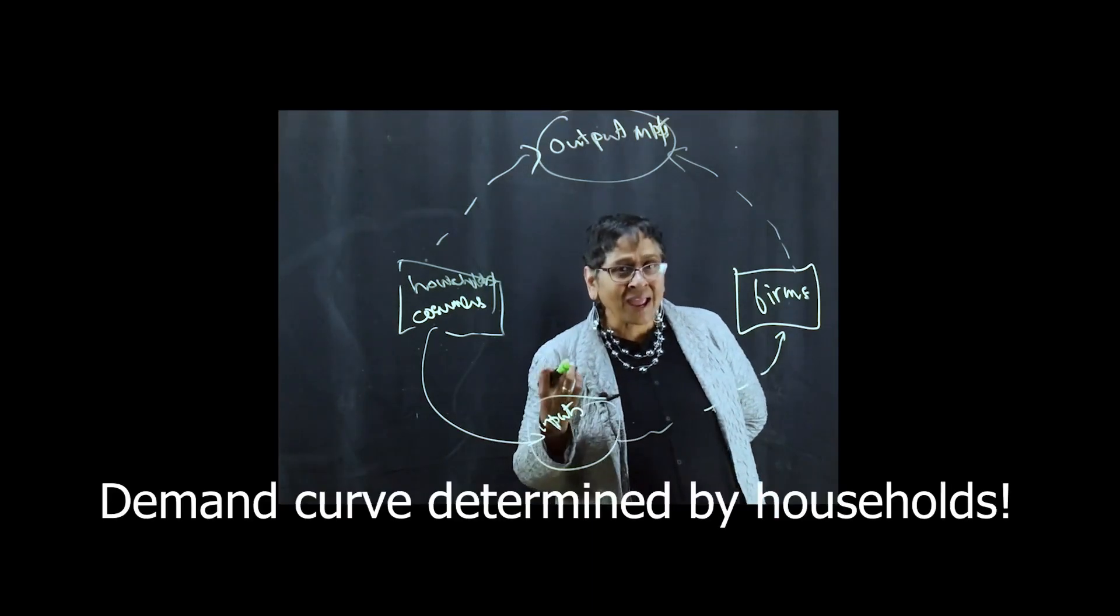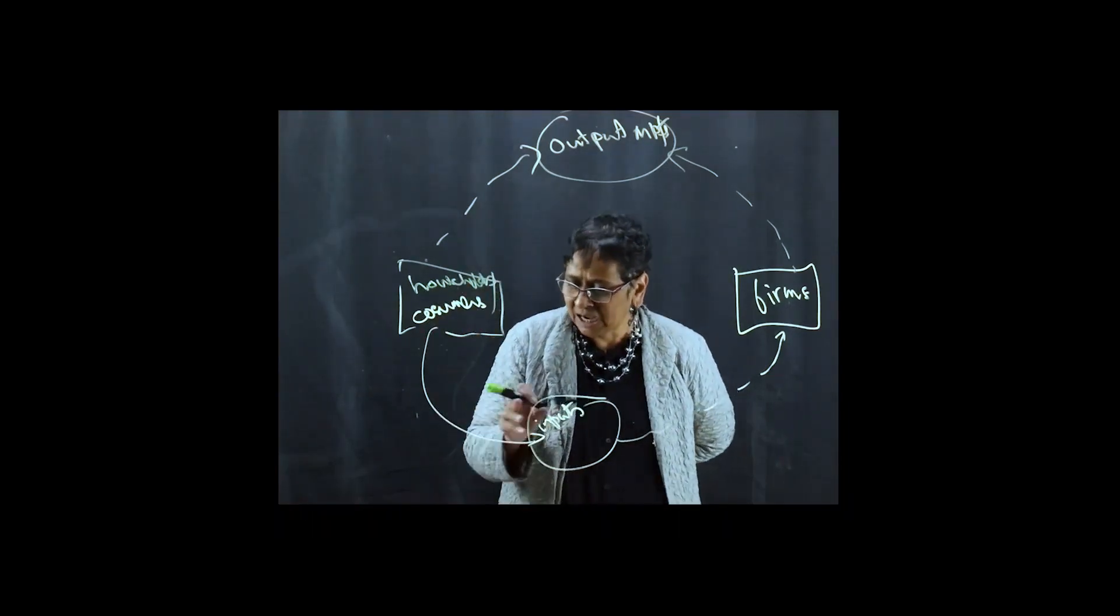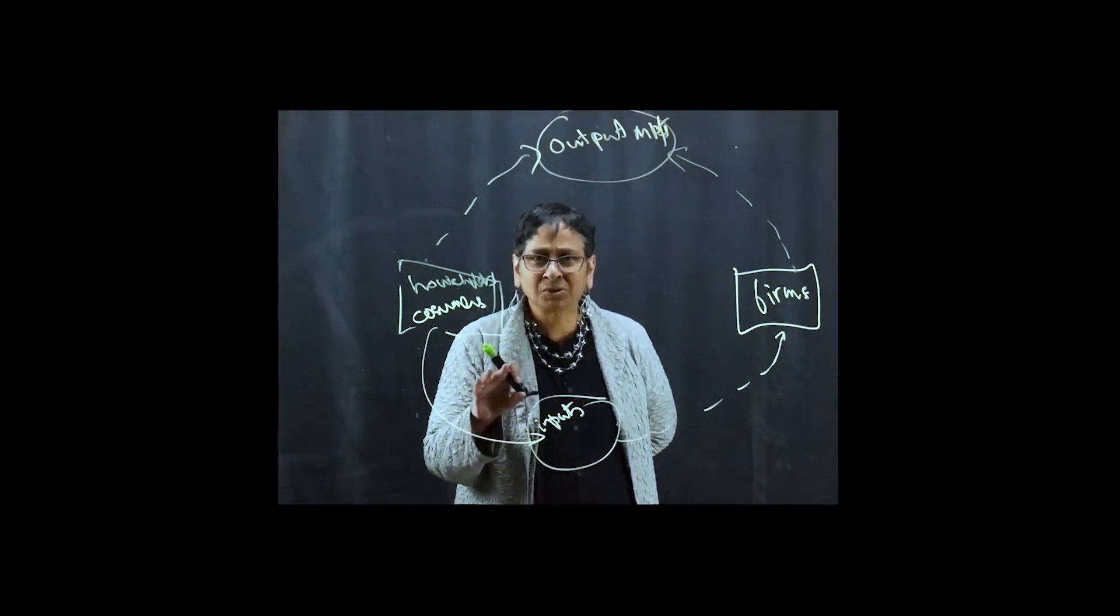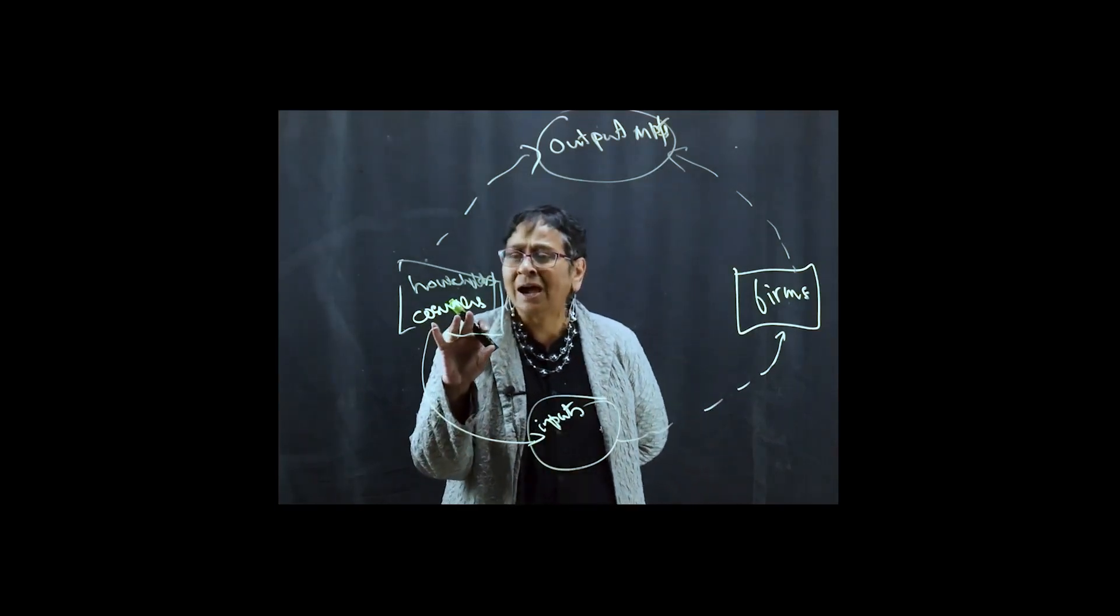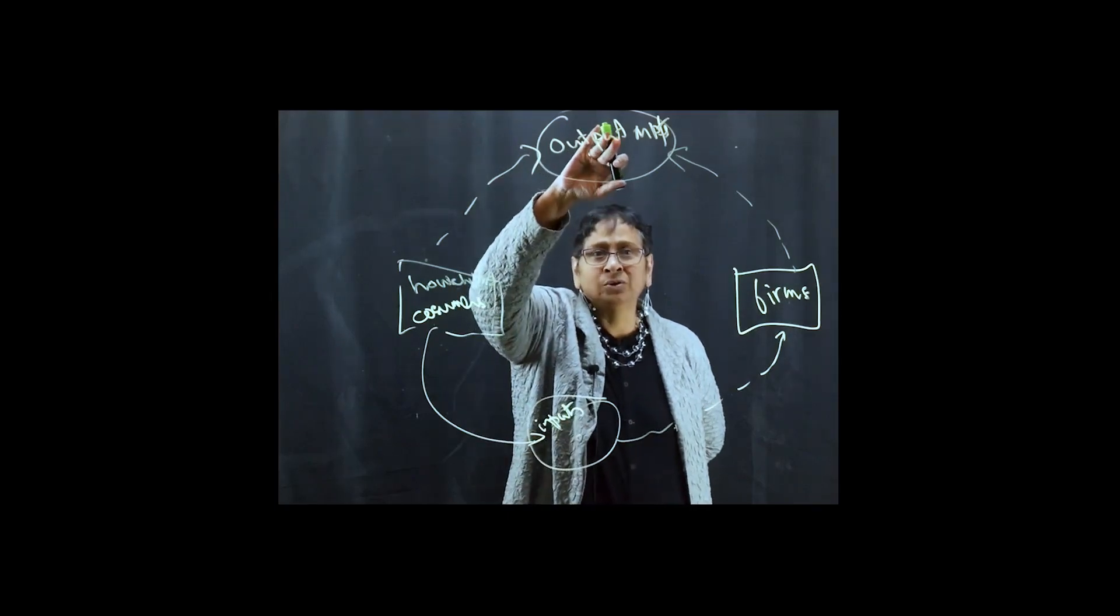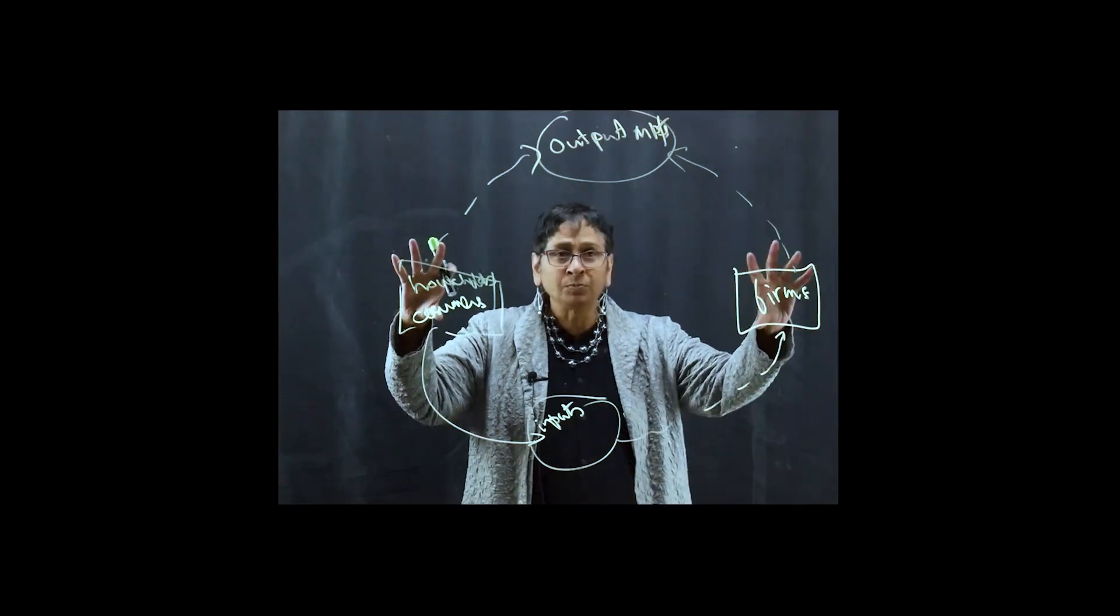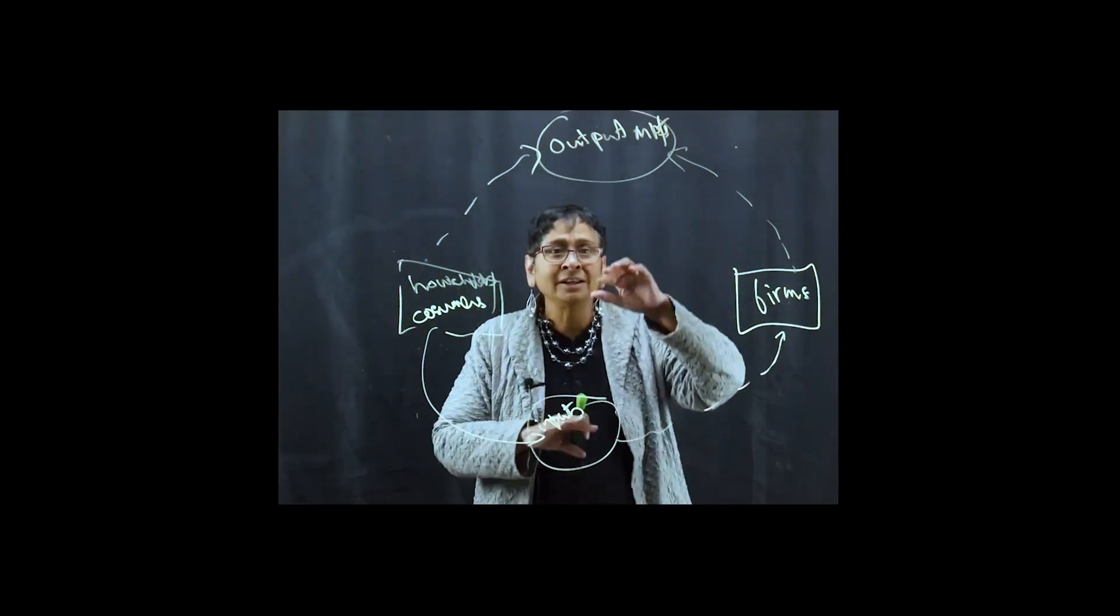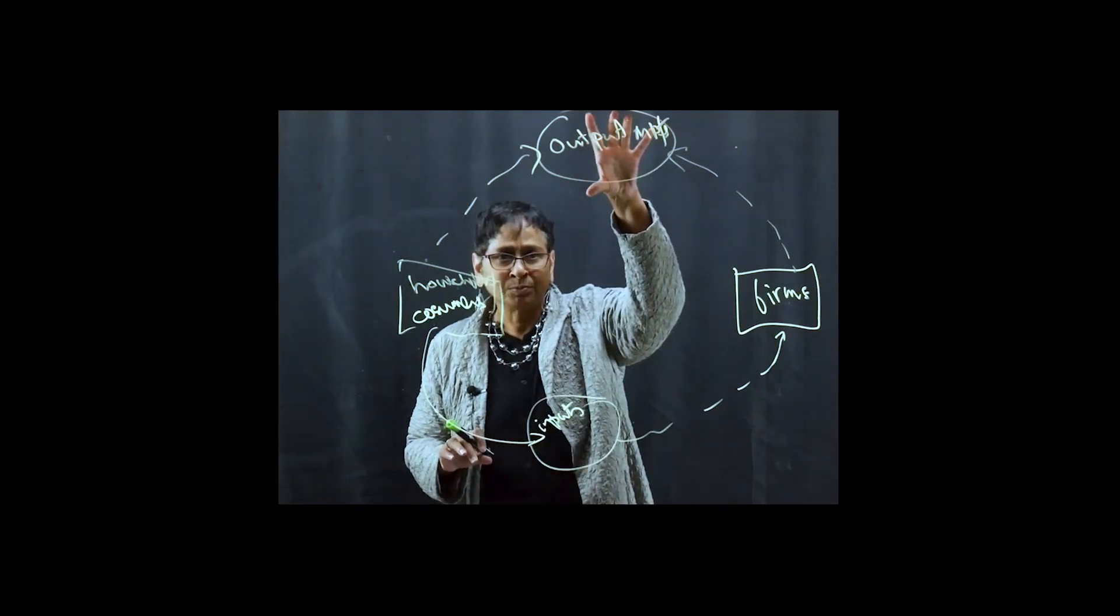The demand curve is determined by households in a parallel fashion. How much wages, how much profit, how much interest rent am I earning? How do I use that to buy goods and services? So both groups are interacting and they are both interacting in two different kinds of markets, an input market and an output market.